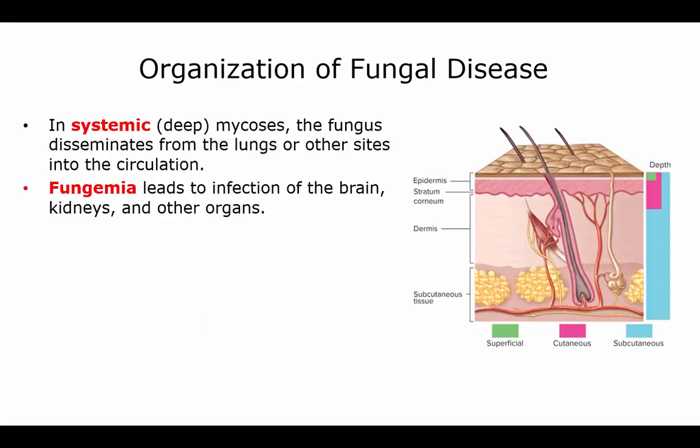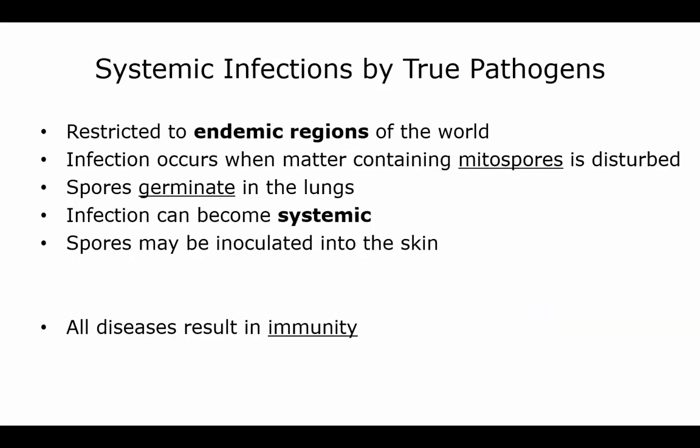In systemic or deep mycosis, the fungus disseminates from the lungs and other sites into circulation, and fungemia leads to infection of the kidneys and other organs. Systemic infections by true pathogens are restricted to endemic regions of the world. Infection occurs when material containing mitospores is disturbed and spores germinate in the lungs, allowing infection to become systemic. The spores may also be inoculated into the skin, and all these diseases result in immunity.